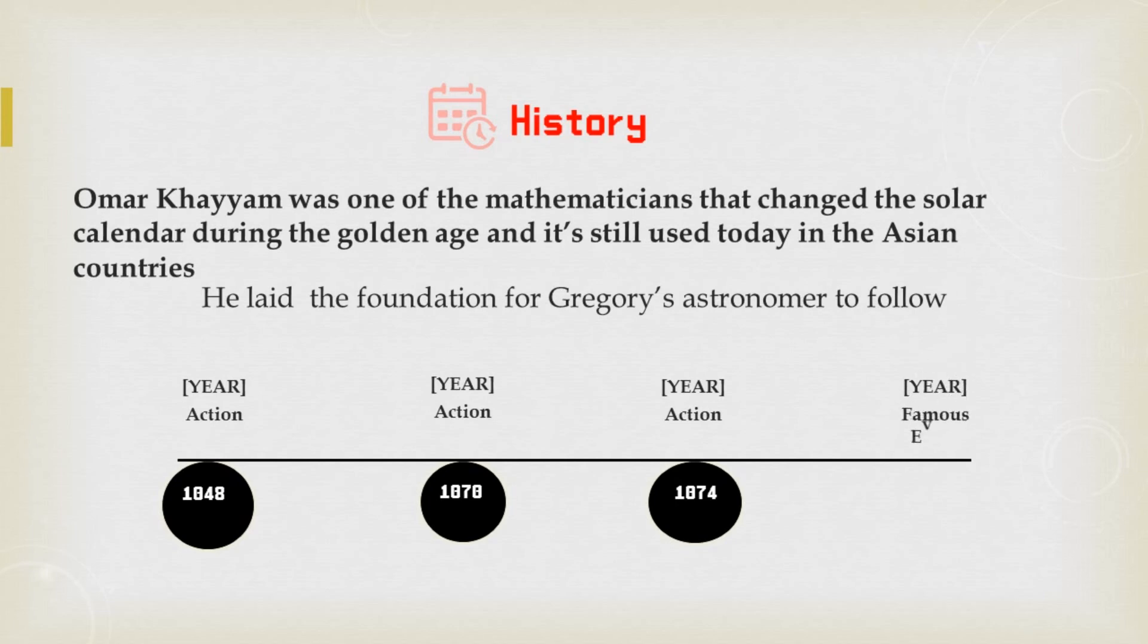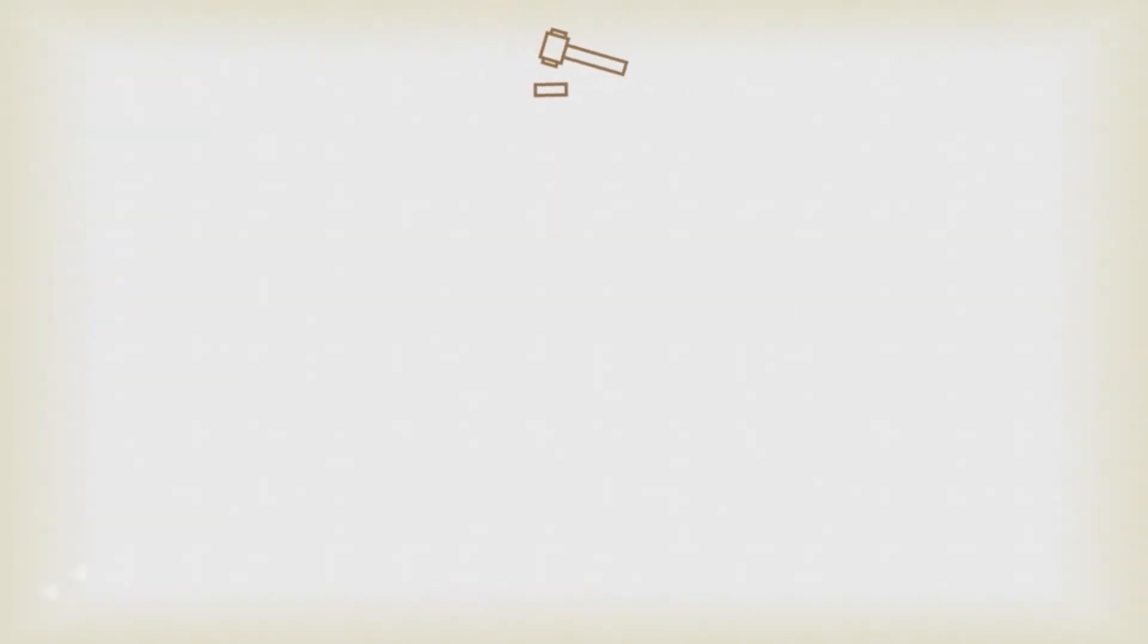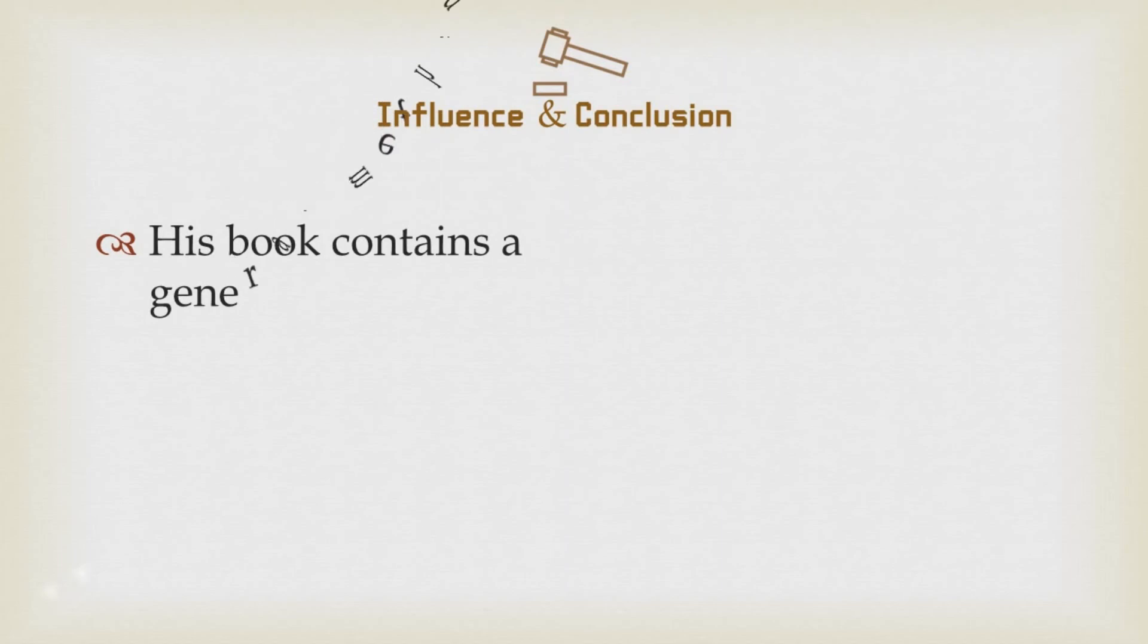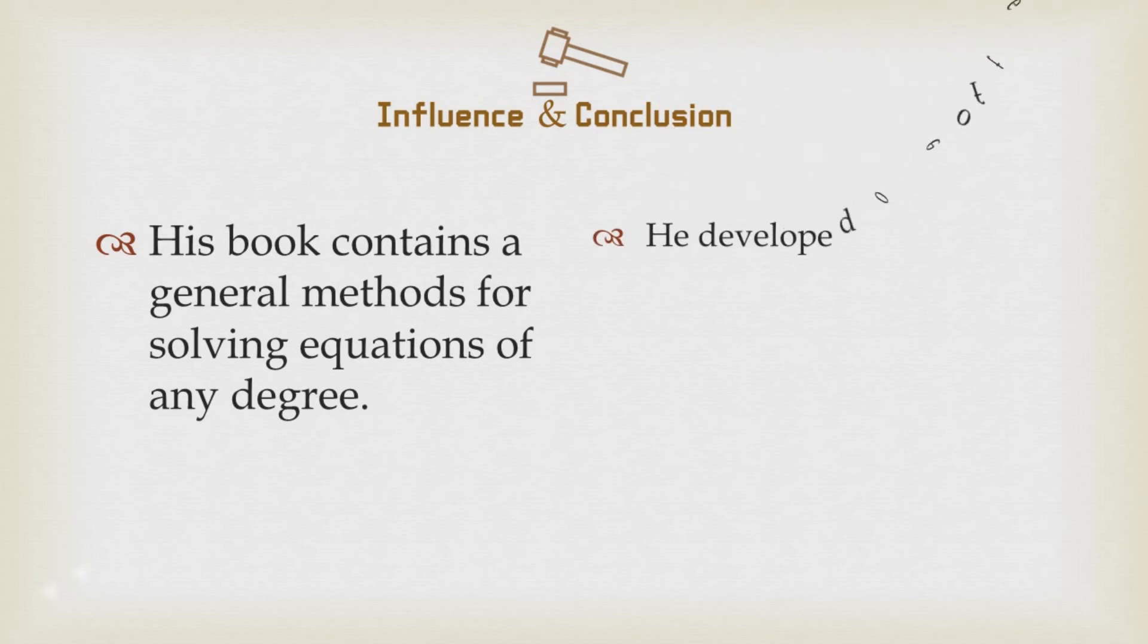Omar Khayyam is also a force to reckon with when it comes to mathematics and the advancement of algebraic concepts in the real world. Conclusively, his book contains general method for solving equations of any degree. He popularized the solution of third degree equation using geometric approach. He also developed one of the most accurate solar counting systems that is known till date.